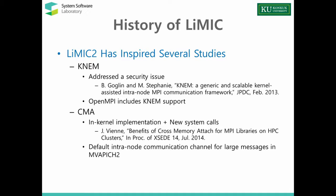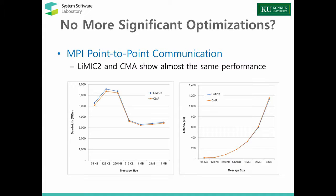However, if we compare the performance, these implementations do not much overcome the performance of LIMIC. This slide shows the bandwidth and latency measurement results of LIMIC2 and CMA on a Knights Landing machine. LIMIC2 and CMA show almost the same performance — LIMIC shows slightly better bandwidth, and latency-wise the difference is quite small. So we had a question whether there are available optimization spaces for better performance of memory mapping.